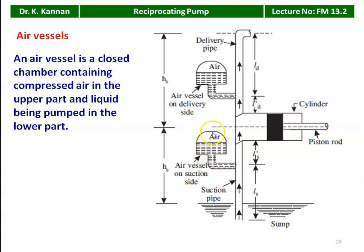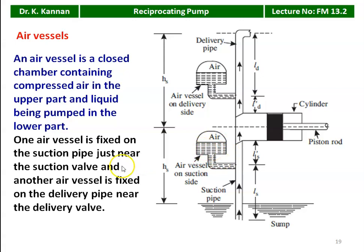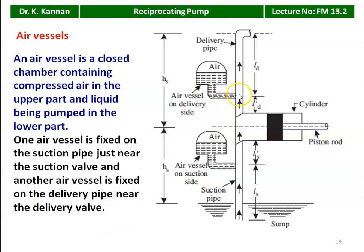The air is compressed because of the liquid in the air vessel. One air vessel is fixed on the suction pipe just near the suction valve — just below the suction valve. Another air vessel is fixed on the delivery pipe near the delivery valve, just at the outlet of the delivery valve.